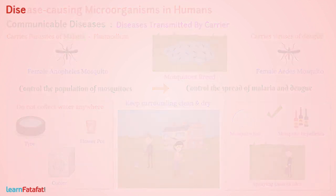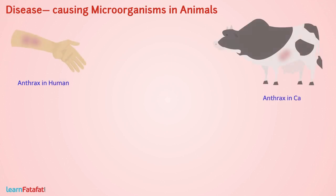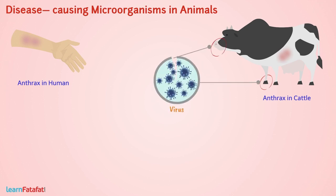Disease-causing microorganisms in animals. Bacteria cause the dangerous disease anthrax in humans and cattle. Foot and mouth disease of cattle is caused by a virus. Vaccination can prevent such diseases.